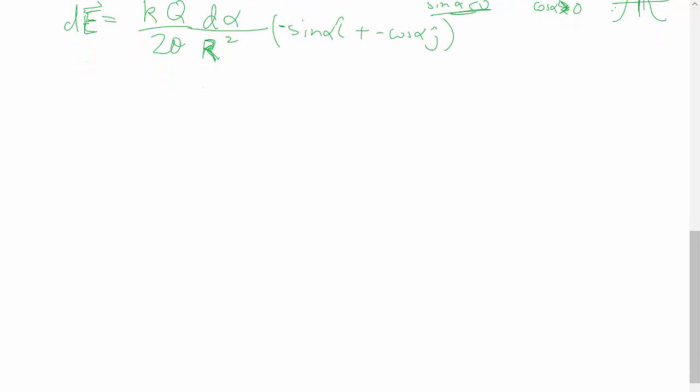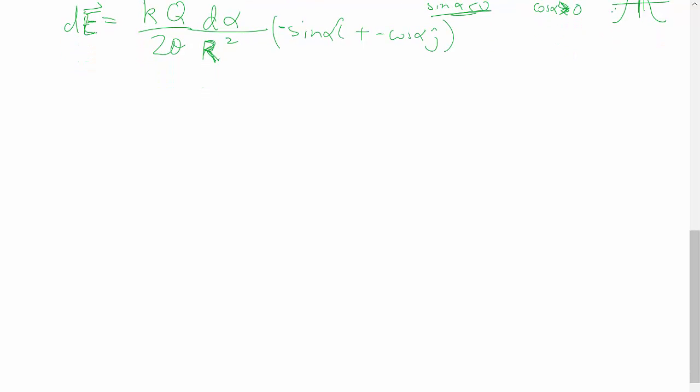And this is where the symmetry cuts down on our work. Instead of doing both x and y, all we have to say is the overall electric field is equal to just the y part of everything, because again, of symmetry. So we just have to sum up just the y part.